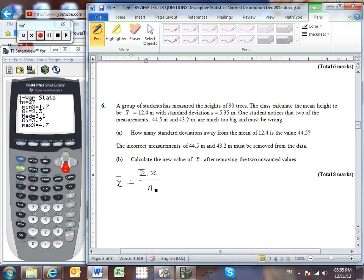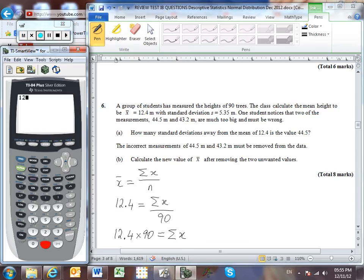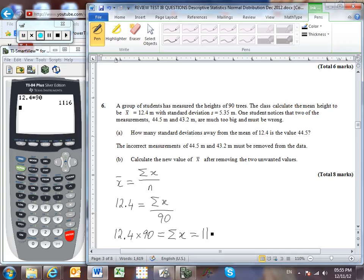In this situation then, our mean is 12.4. I don't know what the sum of my values is, but I know that I've got 90 trees. And so I can rearrange by multiplying both sides of the equation by 90 in order to figure out what the total sum of all of my tree heights is. Let's see what I get then. 12.4 times 90. So my trees all add up to a total height of 1,116 meters.